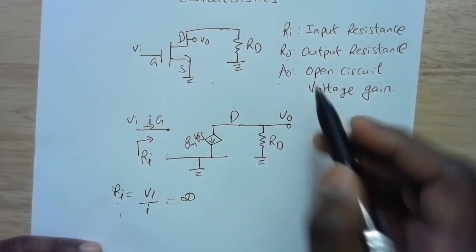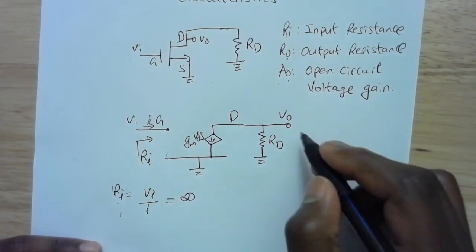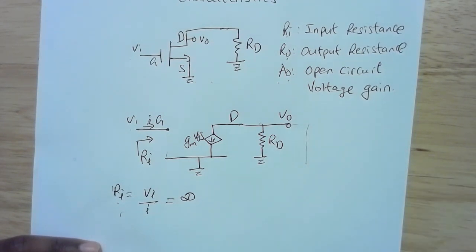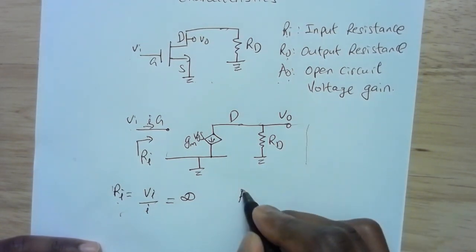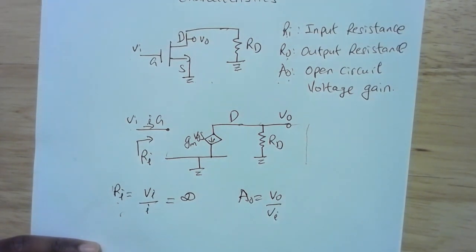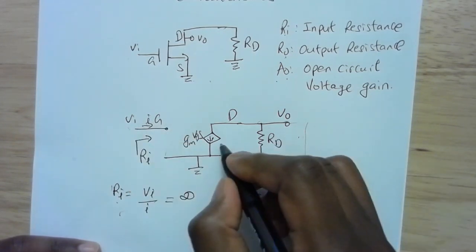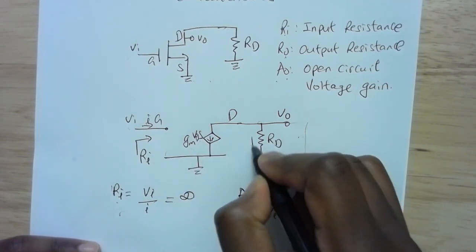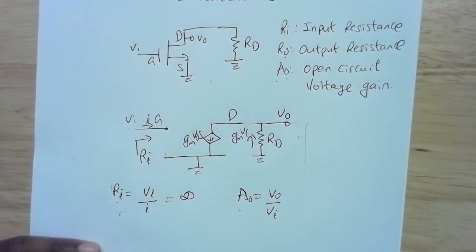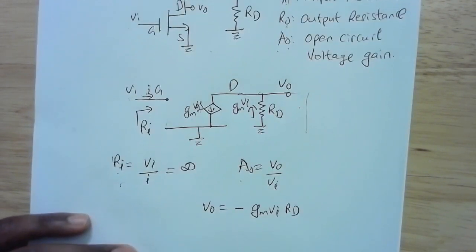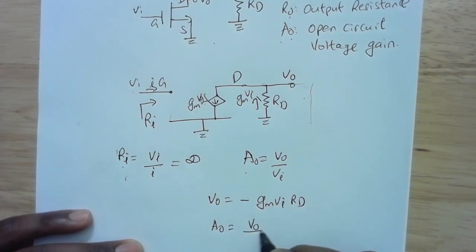Next, let's consider the open circuit voltage gain Ao. Open circuit means we don't connect any load resistance at the output. By definition, Ao equals Vo over Vi. In this case, VGS equals Vi, so the current source is GM·Vi flowing in that direction. Therefore, Vo equals negative GM·Vi·RD, and the open circuit voltage gain Ao equals Vo divided by Vi, which equals negative GM·RD.